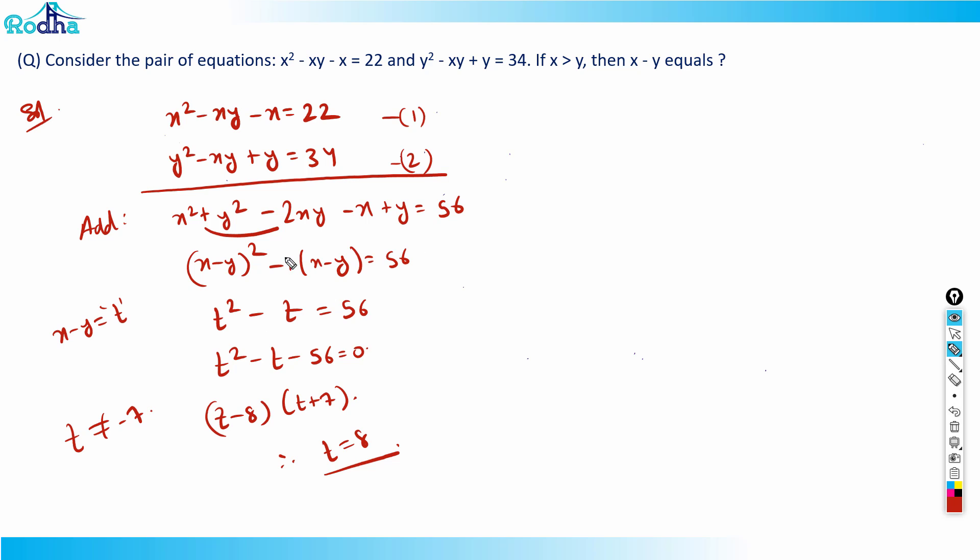And x is more than y, so x - y is positive. If x - y is positive, then obviously t also has to be positive. So t has to be positive, t equals 8, not -7.